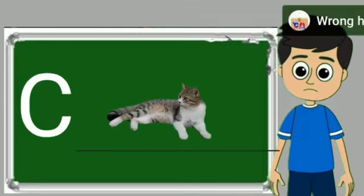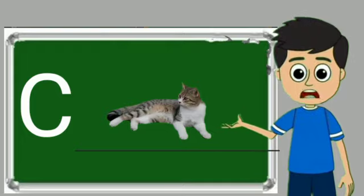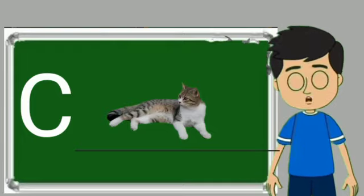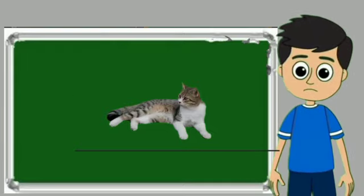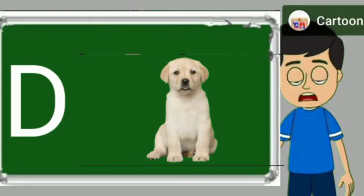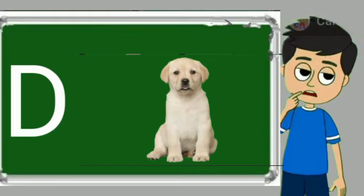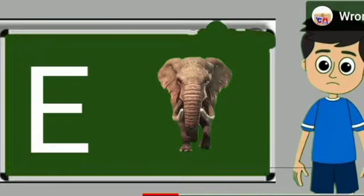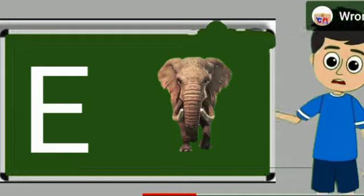C for cat. Cat means billi. D for dog. Dog means kutta.